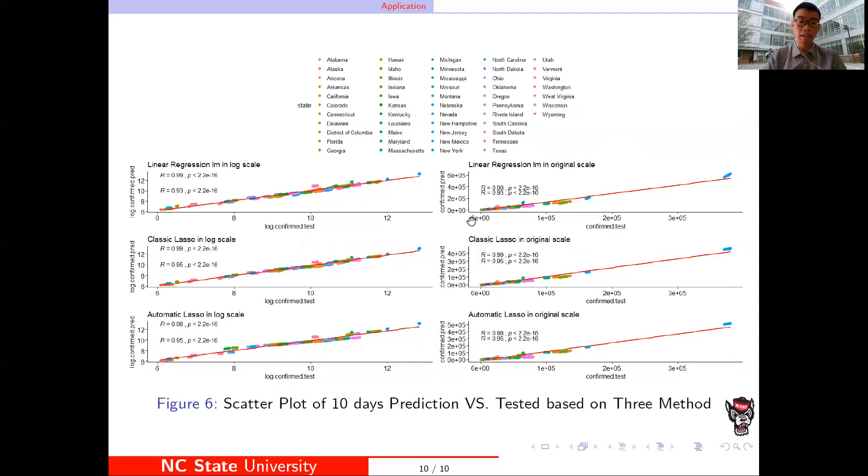The first correlation is Pearson correlation, and the second one is the Kendall correlation. That's all my presentation. Thank you.